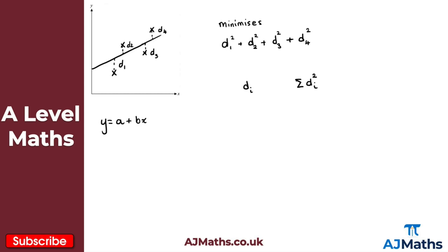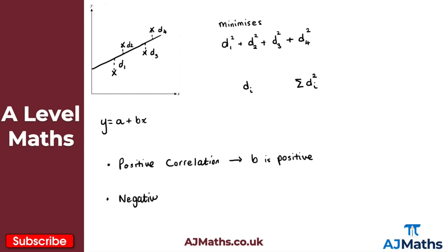We have to be careful here with the order of the variables — the regression line of Y on X will be different from the regression line of X on Y. The coefficient B tells us the change in Y for each unit change in X. If we have positive correlation for our data, then B is positive. And if we have negative correlation, then B will be negative.